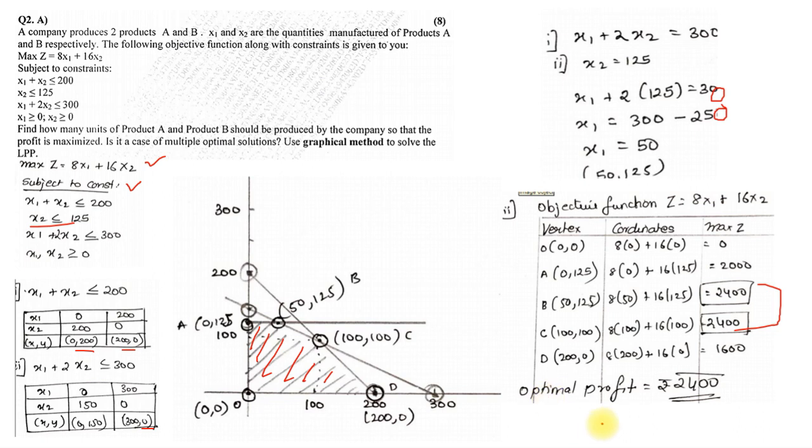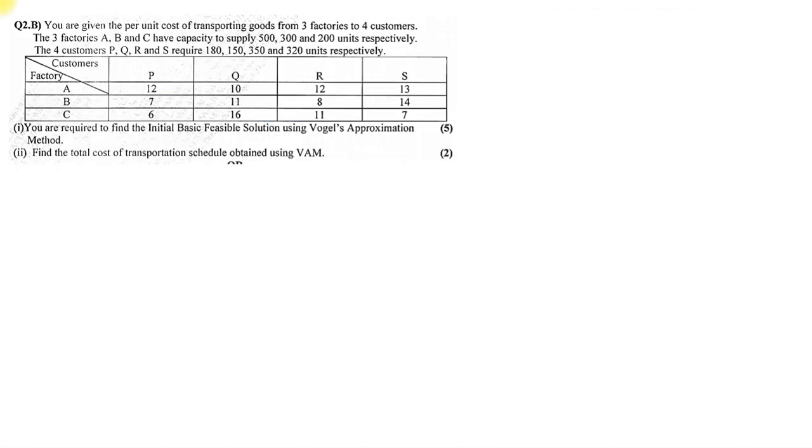Okay, now the next question was question number 2B. You are given the per unit cost of transportation of goods from three factories to four customers. The capacity is 500, 300, and 200, and the customer needs are 180, 150, 350, and 320. Check your demand and supply. So the very first thing, add up demand and supply: 500 plus 300 plus 200 is 1000, and 180 plus 150 plus 350 plus 320 is again 1000, so it is a balanced problem. They give you the table. You are required to find the initial feasible solution using Vogel Approximation Method, that is VAM method, and also find the total cost.